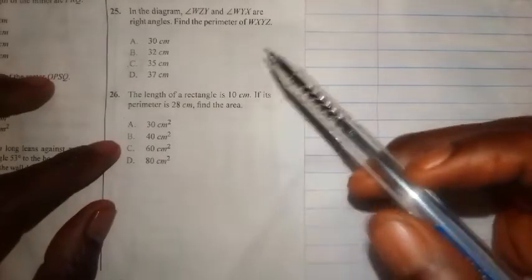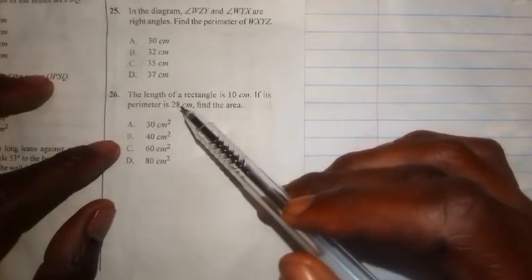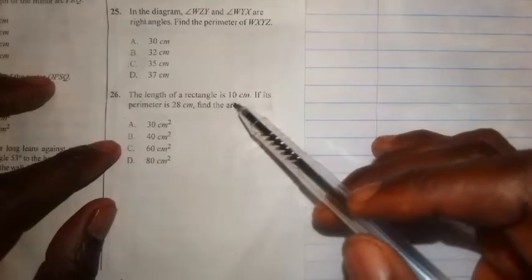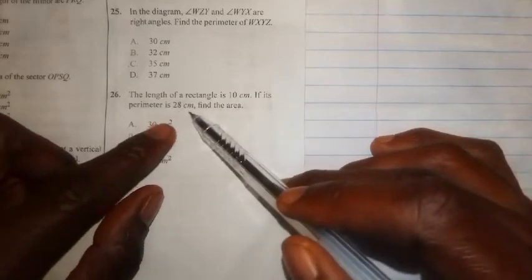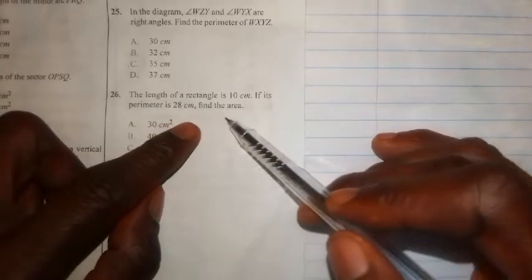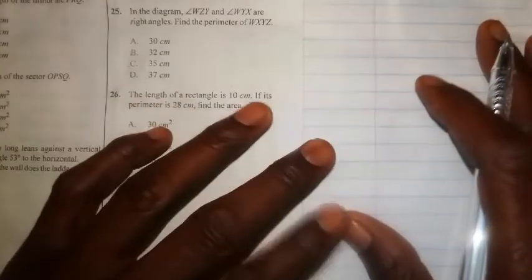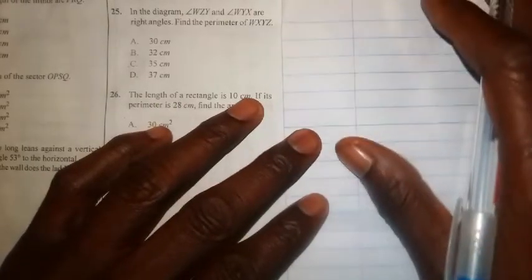Now let us see what this question is all about. It says the length of a rectangle is 10 centimeters. If its perimeter is 28 centimeters, find the area. So how do we solve this problem?